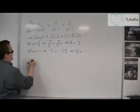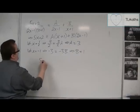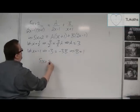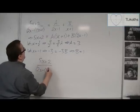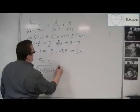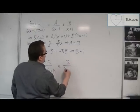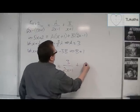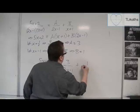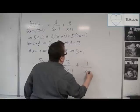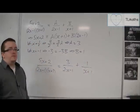And so, therefore, (5x + 2) / ((2x - 1)(x + 1)) is equivalent to 3 / (2x - 1) plus — sorry, not 3 — 1 / (x + 1). And that's how we can do partial fractions.